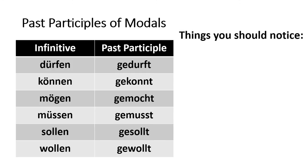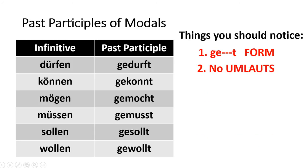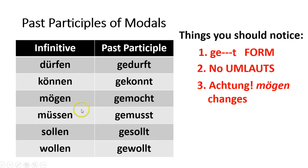Some of the things you may have noticed is that the past participle follows that ge- form. You might have also noticed that there are no umlauts — so in können, where there's an umlaut, gekonnt has no umlaut in the past participle. And last but certainly not least, when we look at mögen — 'to like' — it totally changes. Not only is there no umlaut from the infinitive to the past participle, but the G becomes CH.